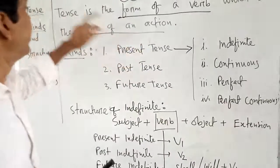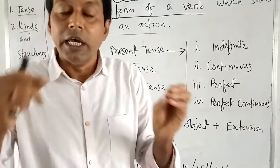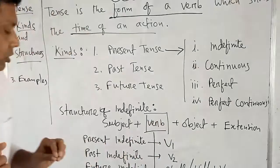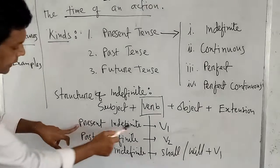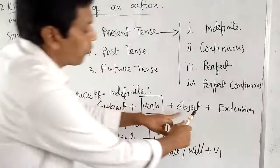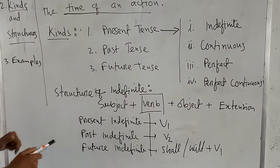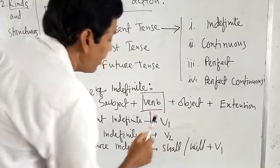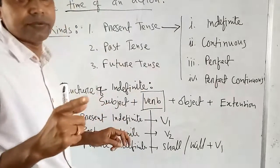Here, subject and object will be fixed. Only the verb will be changed. At first, we will discuss the forms of a verb. We will learn by comparison, and we will understand easily. So for present indefinite tense, past indefinite, and future indefinite — the subject and object remain as usual. In the case of present indefinite tense, the verb will be in its principal present form, which I indicate as V1.